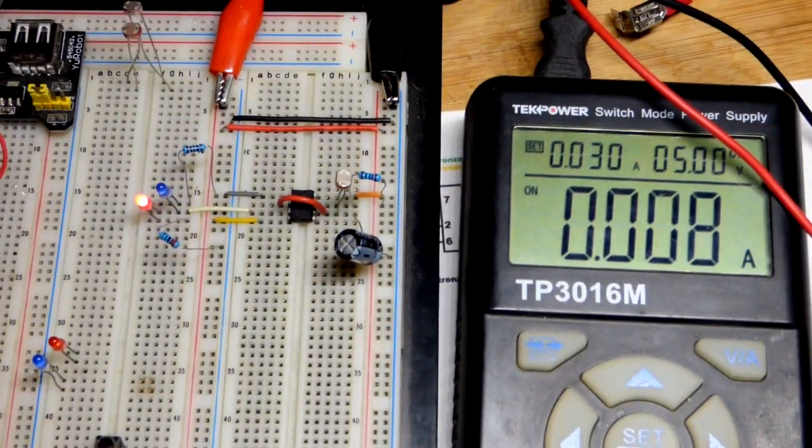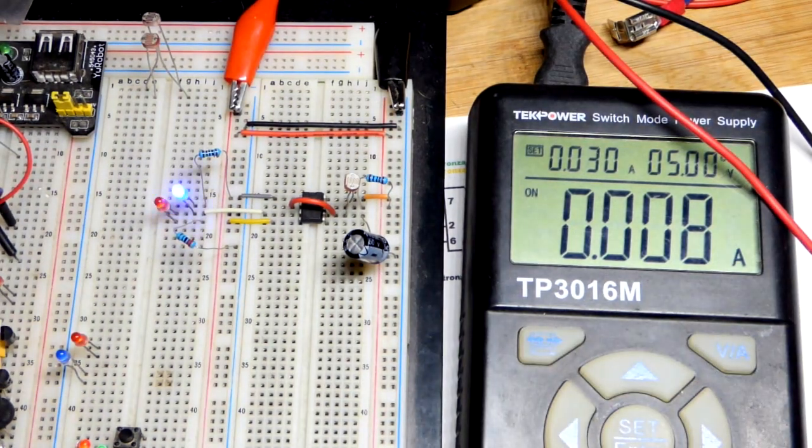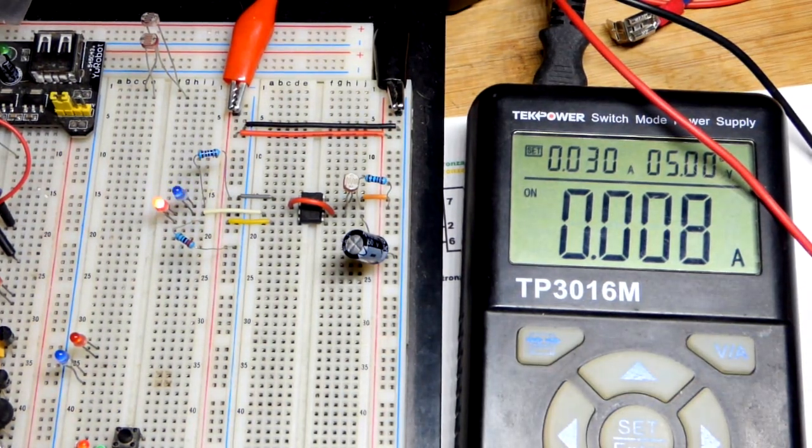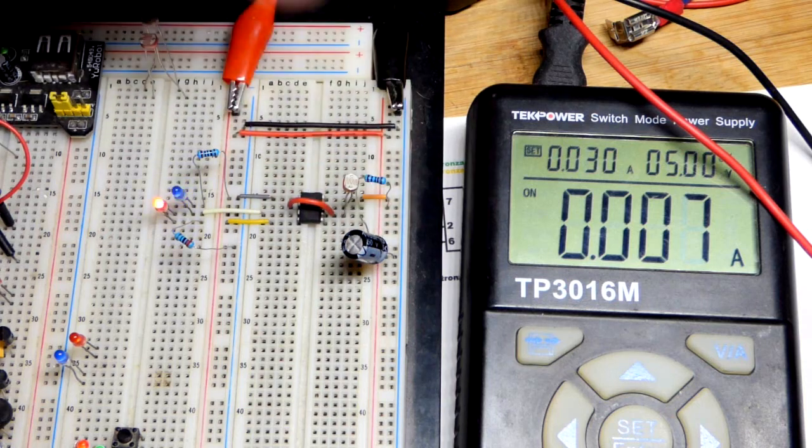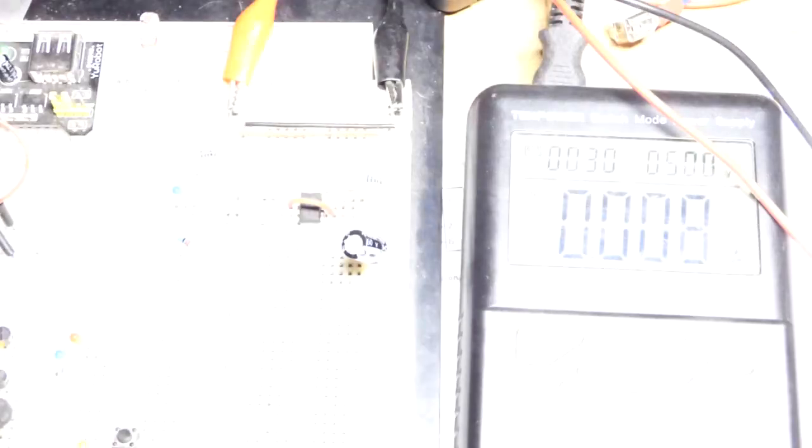But in any case, there you can see. Now we have the light-dependent resistor. Turn the lamp up, it goes faster. I can either cover it or turn the lamp down, and it goes slower.